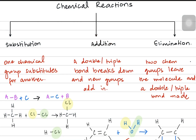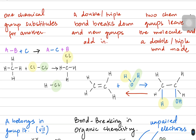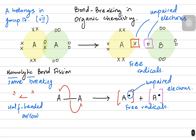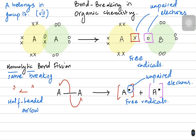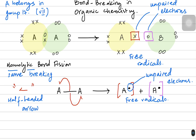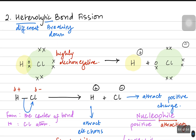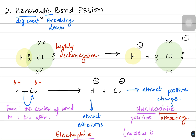In the previous video we talked about chemical reactions in organic chemistry, which included substitution, addition, and elimination. We also talked about the types of bond breaking: the first was homolytic bond fission, where two atoms break their bond so that both atoms receive one unpaired electron, giving two free radicals. The second was heterolytic bond fission, where one atom receives the entire bond pair while the other receives no electron — an unequal bond breaking process.